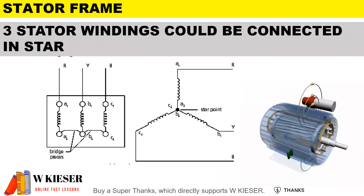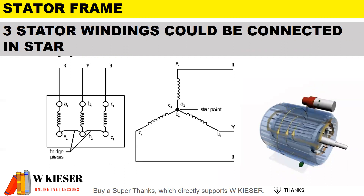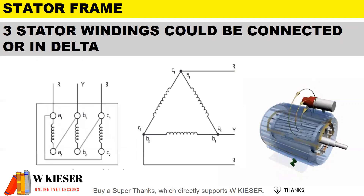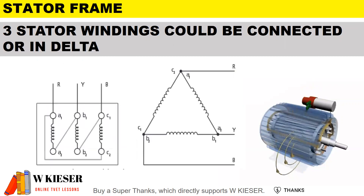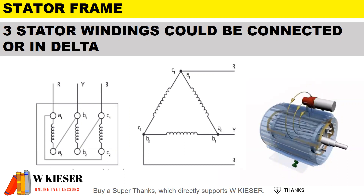The three stator windings could be connected in star. If you have a look at the terminal box, you'll see that for a star-connected three-phase motor it is bridged horizontally. The three stator windings could also be connected in delta. If you look at the terminal box, you'll see that the stator windings are bridged vertically.